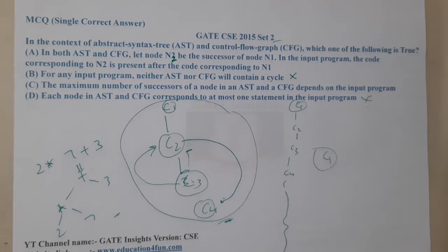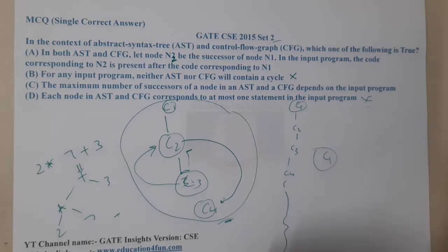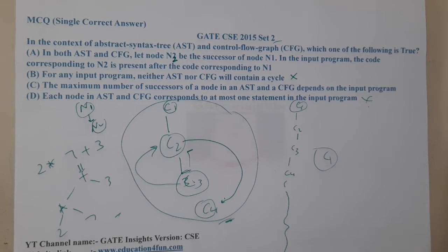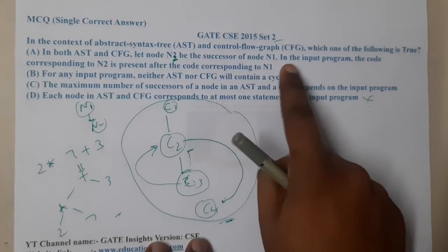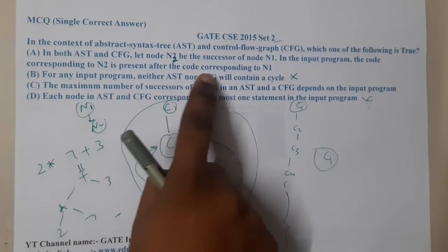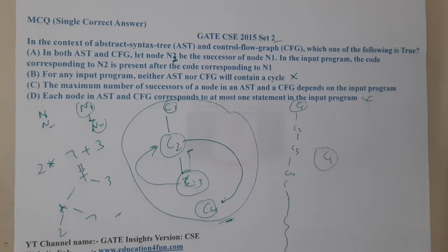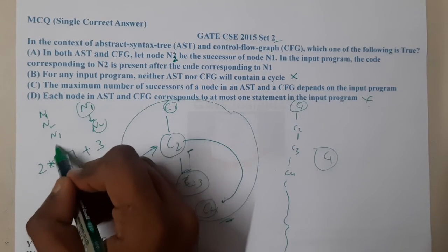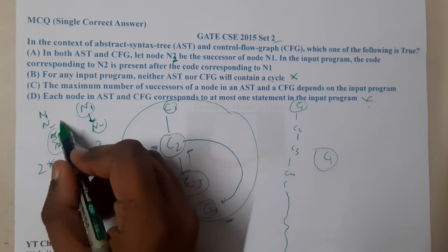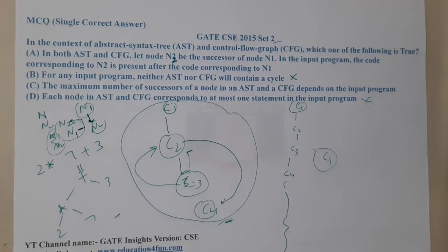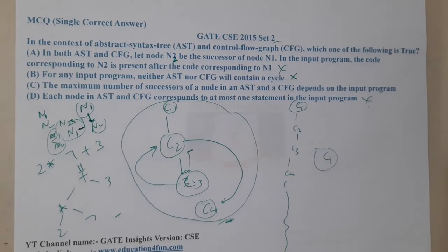Option A says in both AST and CFG, N2 being the successor of N1 means the code for N2 is present after the code for N1 in the input program. However, consider a goto statement — the flow might go from N1 to N2, but in the actual source code the order could be N2 then N1. The goto pushes execution back to N1, so the code is in reverse order. This makes option A wrong as well.